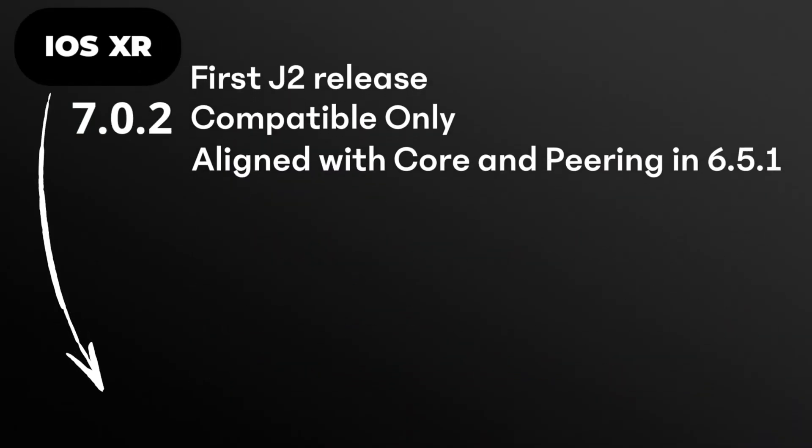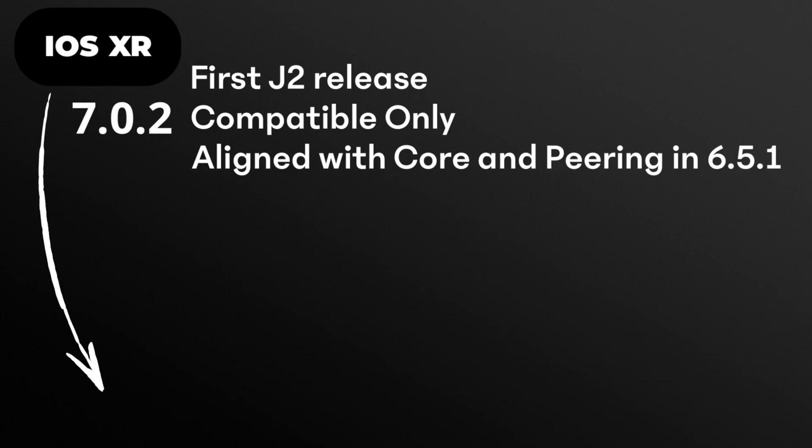Now let's talk about feature support. It will be important to pay attention to these details at least during the next couple of releases. Not all features are supported day one on Jericho 2 line cards and in all operation modes. It's a phased approach that started with XR 7.0.2 where the first J2 line cards were introduced with compatibility mode only. To meet the most pressing customer requirements and the most frequent use cases, we started with core and peering features, using J Plus capabilities in 6.5.1 as a reference point.